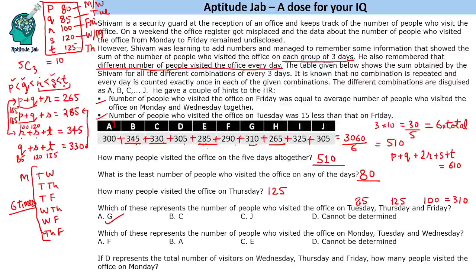The natural answer for Monday + Tuesday + Wednesday might seem 'cannot be determined,' but we know Monday + Wednesday = 200, even if we can't find unique values. Tuesday is 85, so Monday + Tuesday + Wednesday = 200 + 85 = 285, which is represented by e.